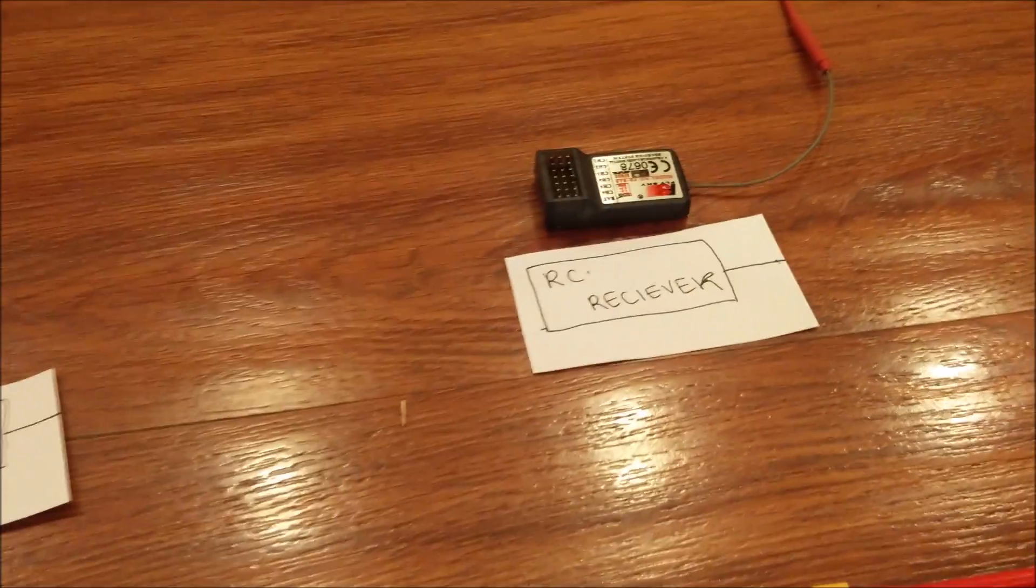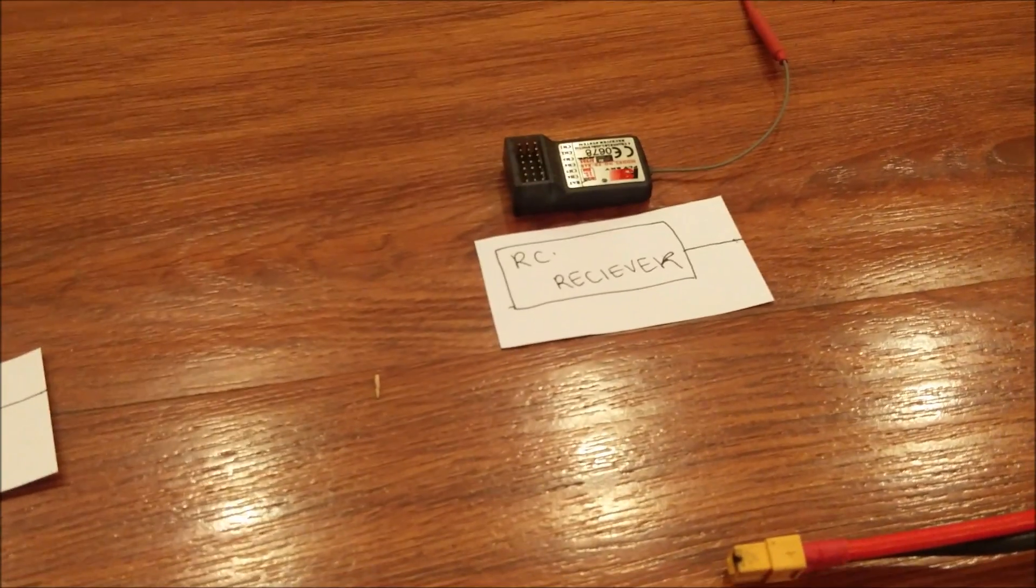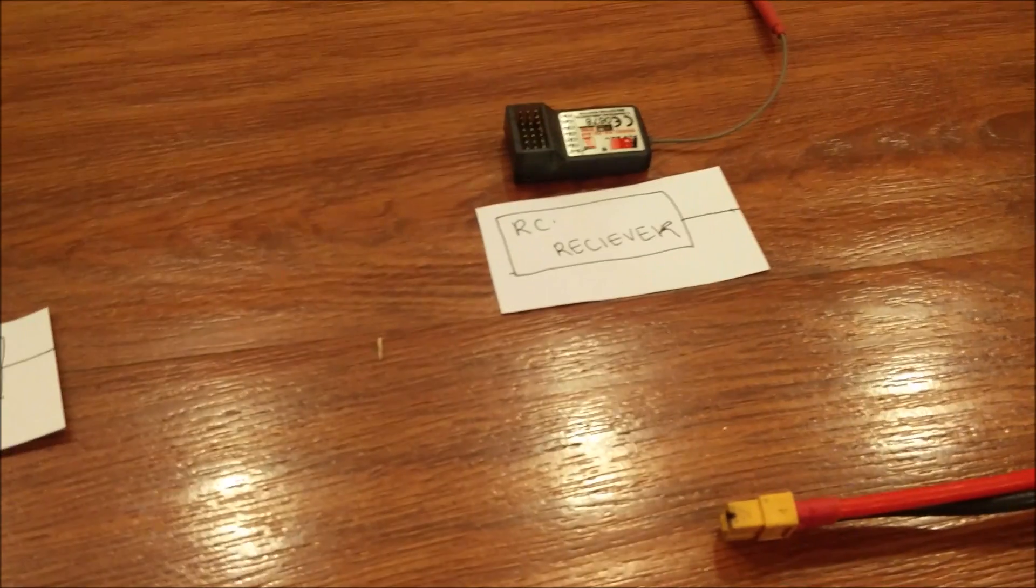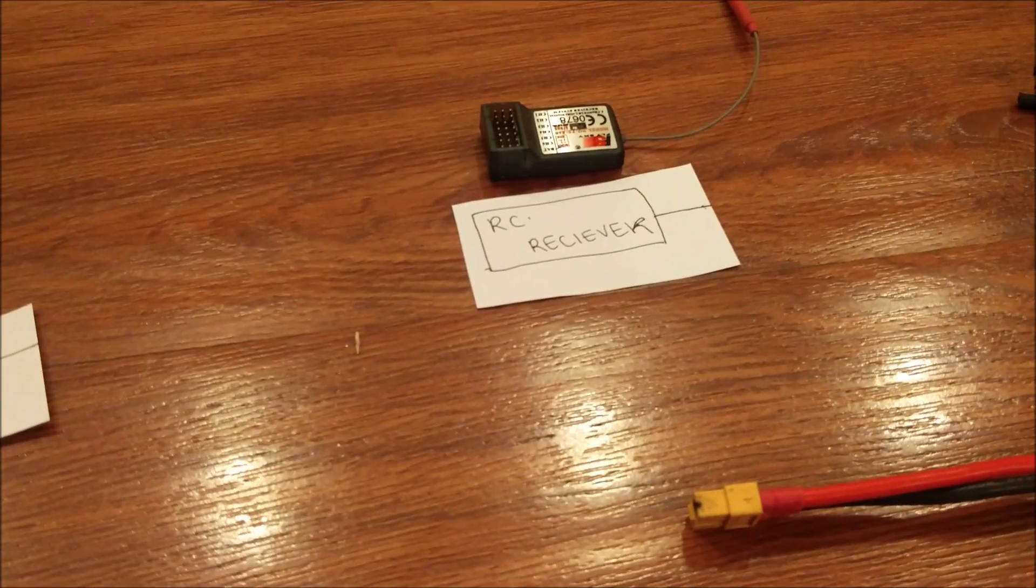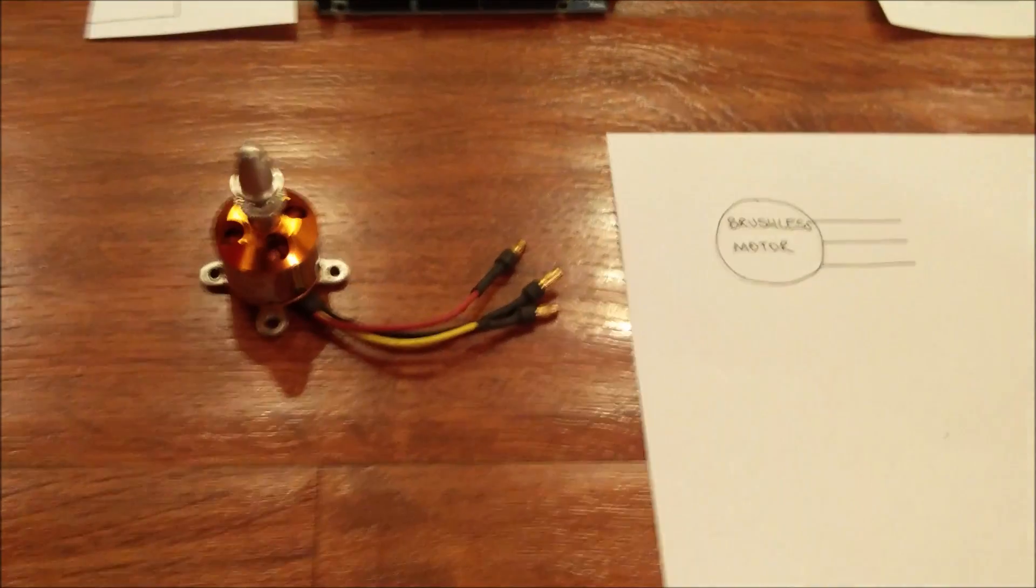It also takes inputs from an RC receiver on what the user wants the drone to do and makes according adjustments in motor speed. Now let's see how all of these integrate together.